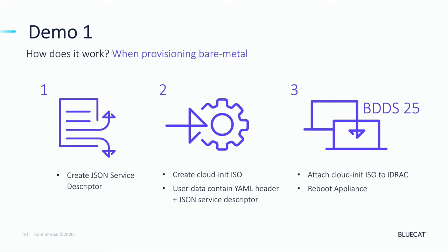In step two we're going to be creating a Cloud Init ISO file — encapsulating the service descriptor in user data, adding some basic metadata, and then creating the ISO file for this BDDS appliance using the Linux command gen-iso-image. In step three we'll attach this Cloud Init ISO file to the BDDS25 appliance's iDRAC virtual media and reboot the appliance to provision it to its desired service configuration. After this reboot, we'll take the BDDS25 under BAM control to check that its service configuration has been correctly applied.